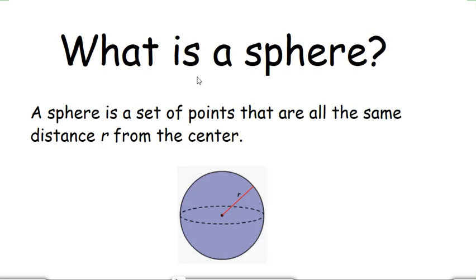So what is a sphere? Let's start with the definition. Here's our definition. A sphere is a set of points that are all the same distance, known as R, from the center.